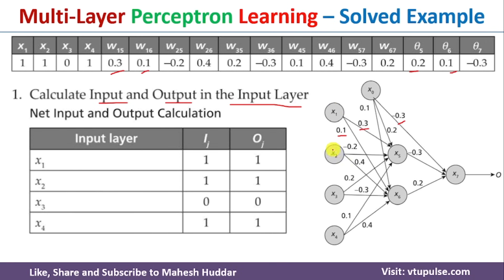The inputs to x1, x2, x3, x4 are already given to us. The output of these neurons is exactly the same as the input, because we do not do any modification at the input layer. So the output at the input layer neurons is identical to the input: input is 1, 1, 0, 1 and the output is 1, 1, 0, 1 respectively.